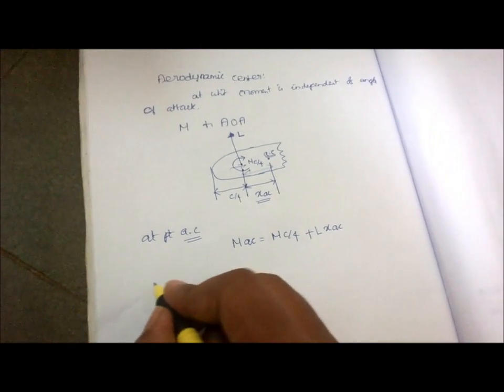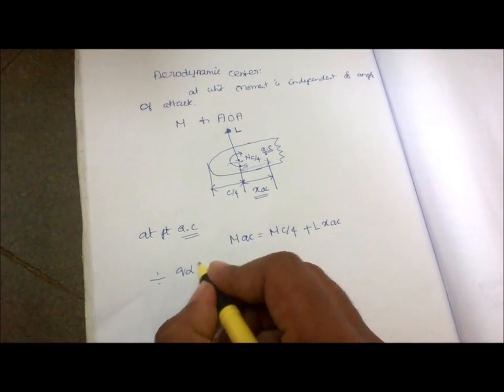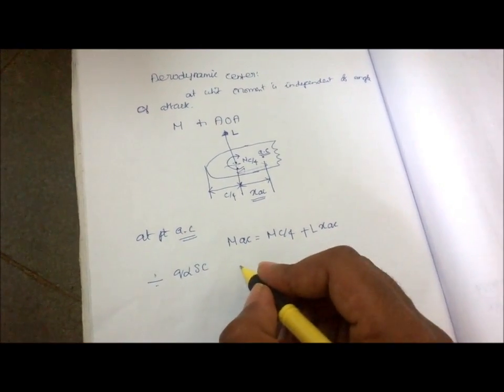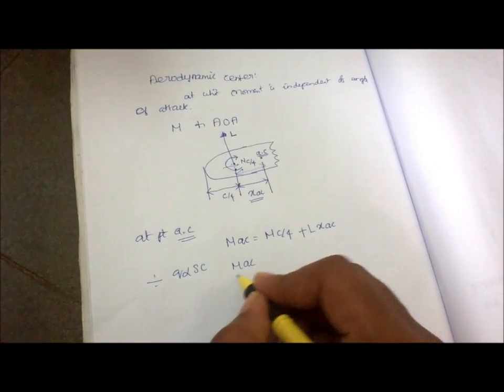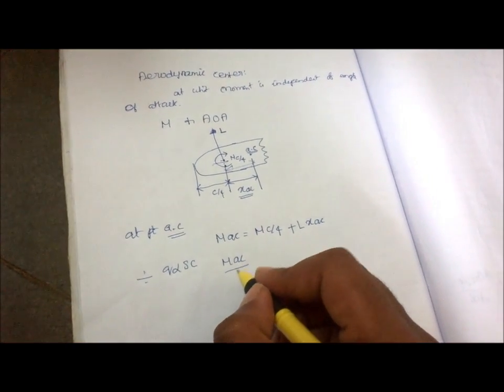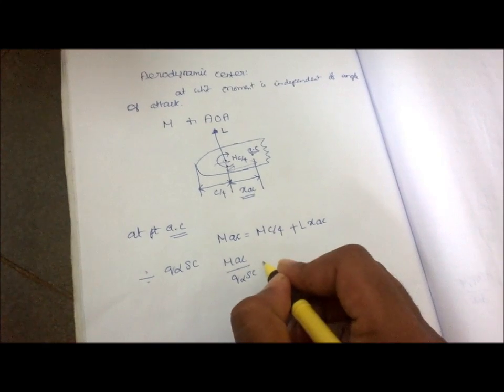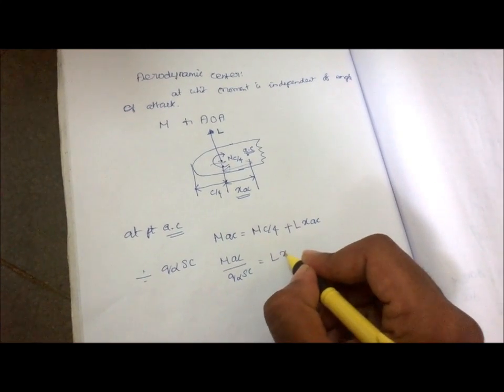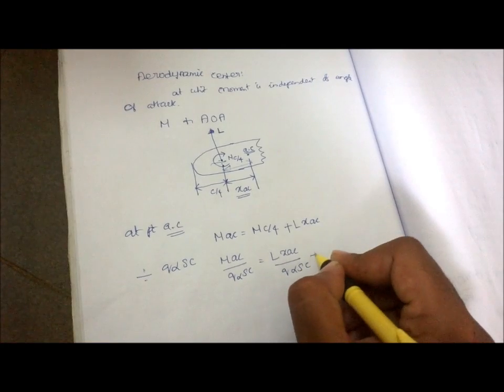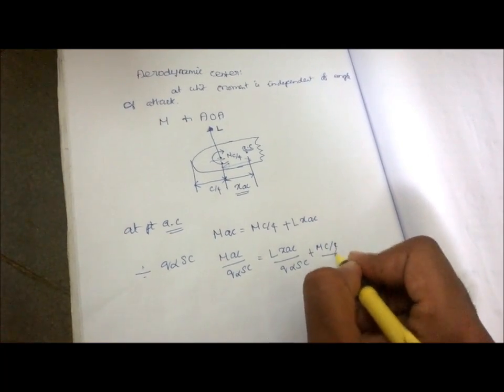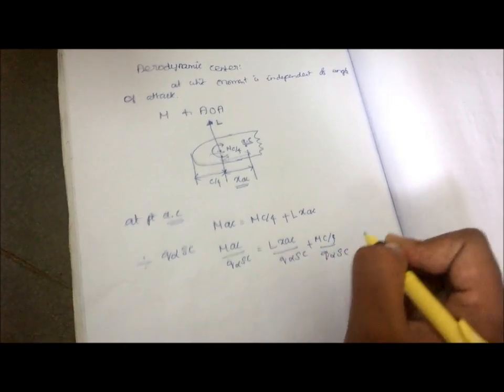Now divide this equation by q infinity SC. This will become M_AC by q infinity SC equal to L times X_AC by q infinity SC plus M_C/4 by q infinity SC.